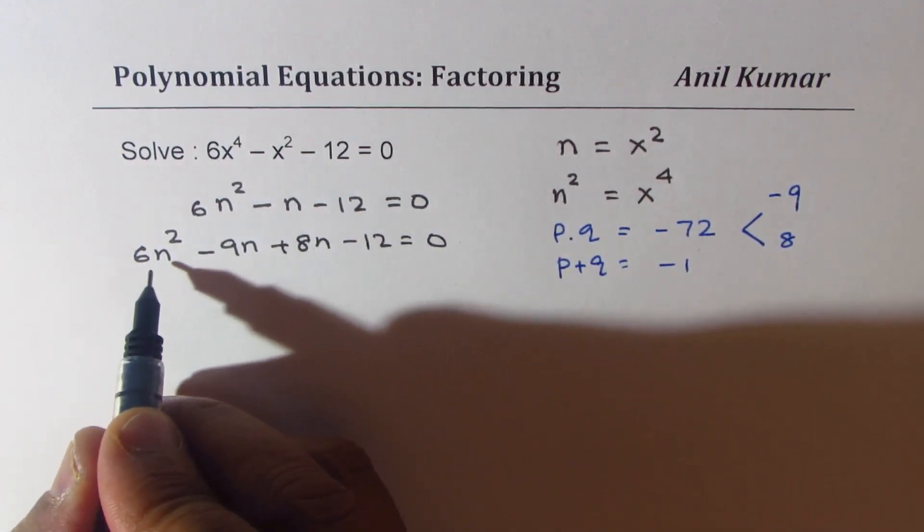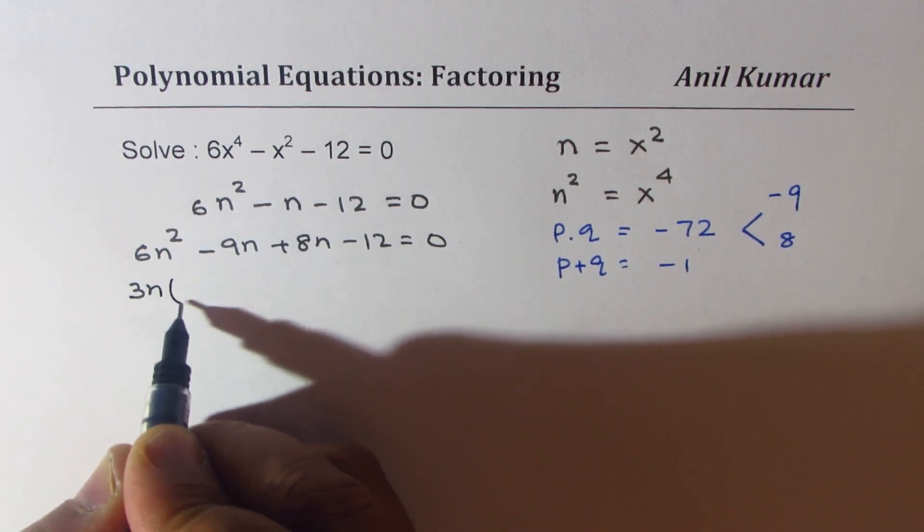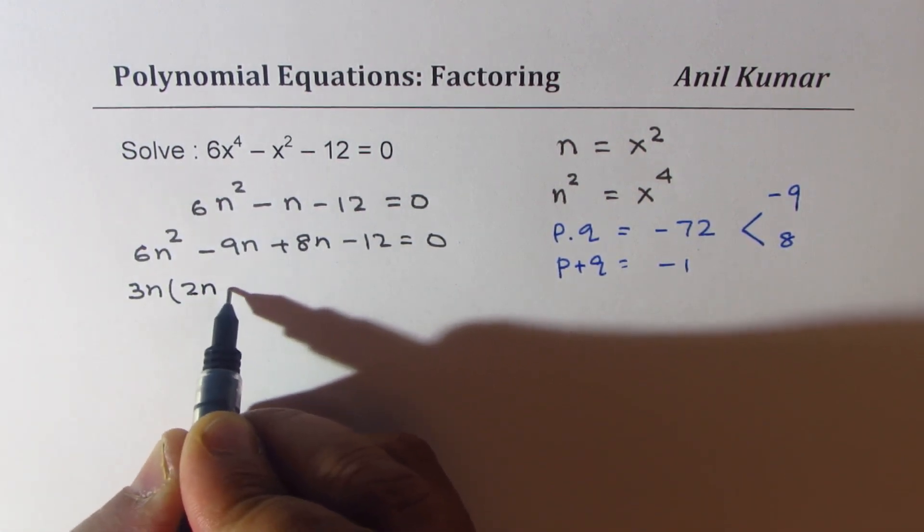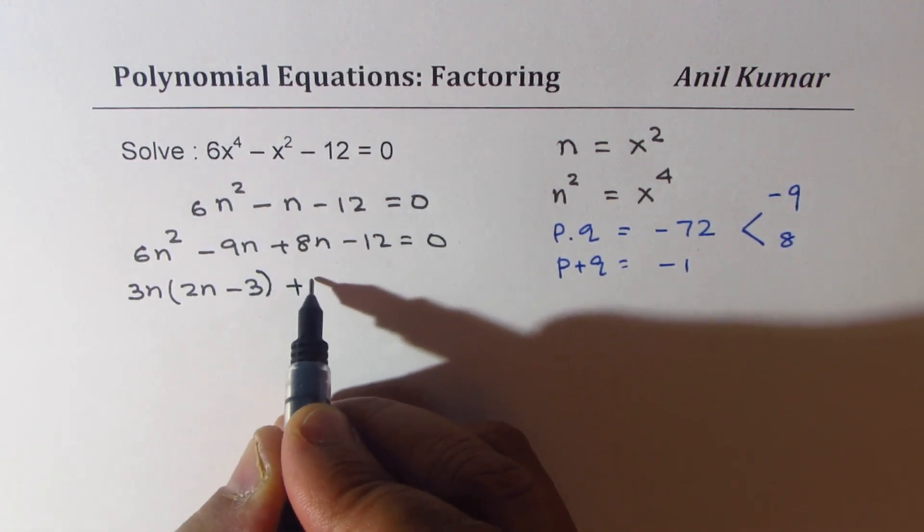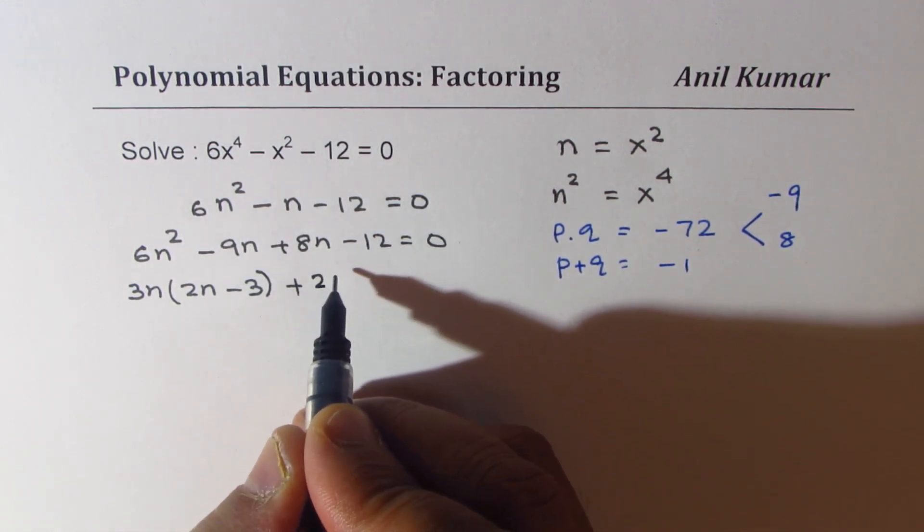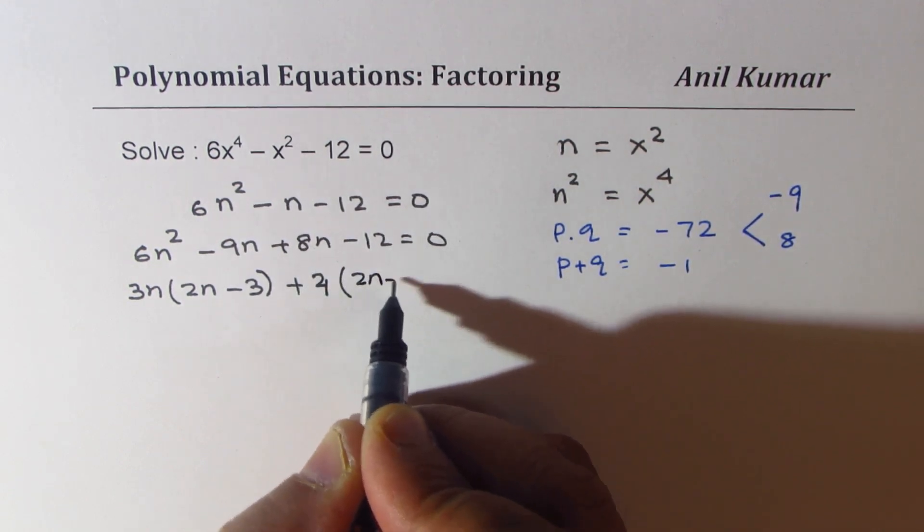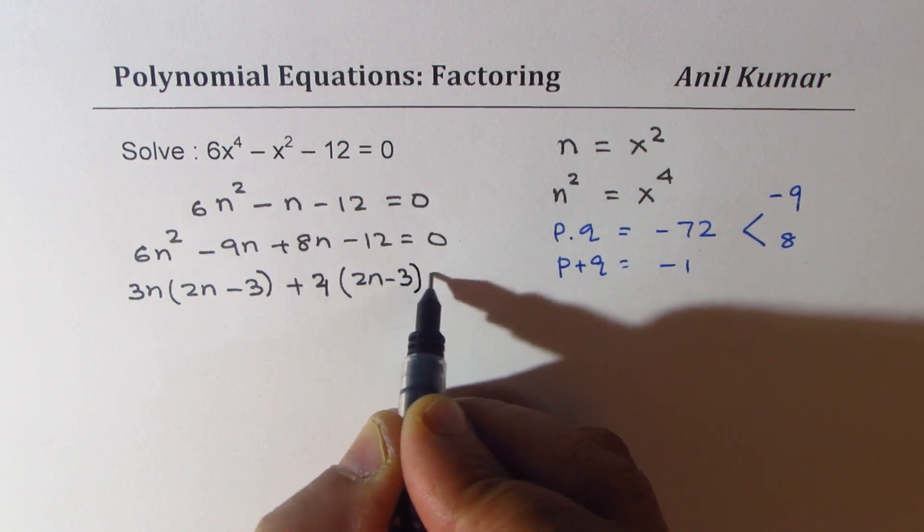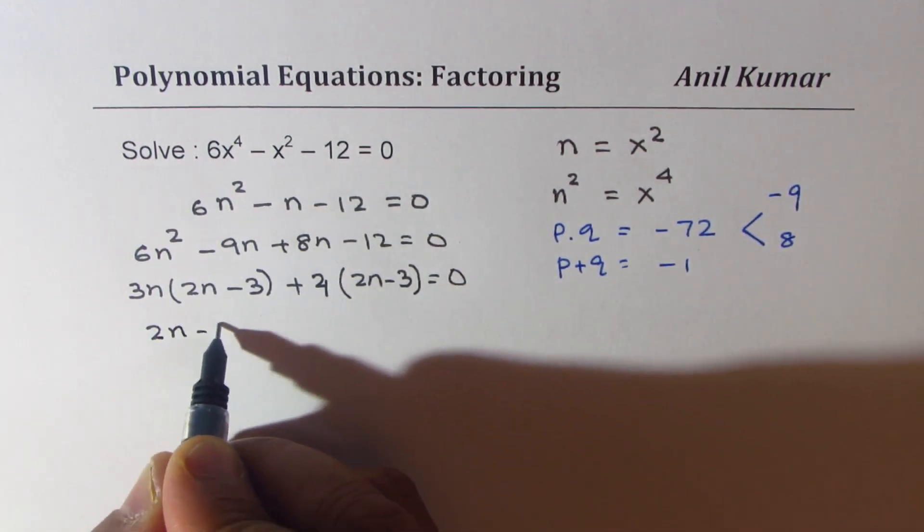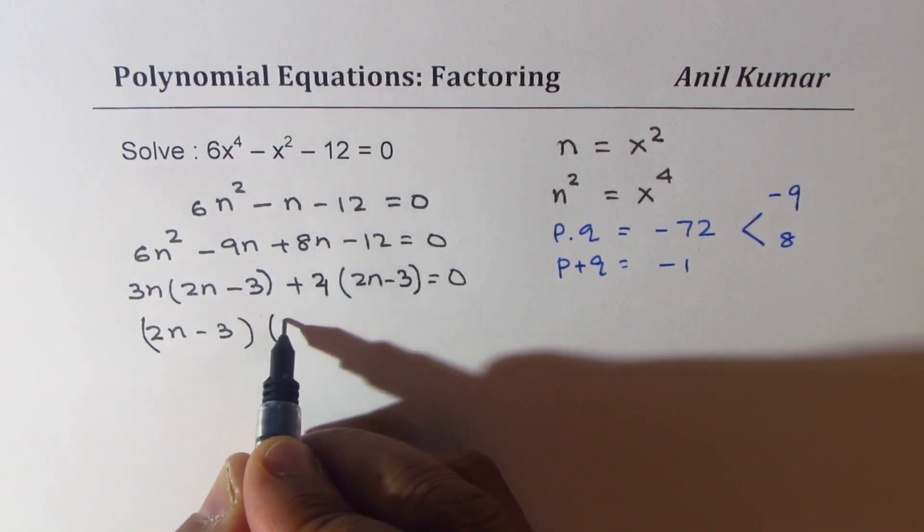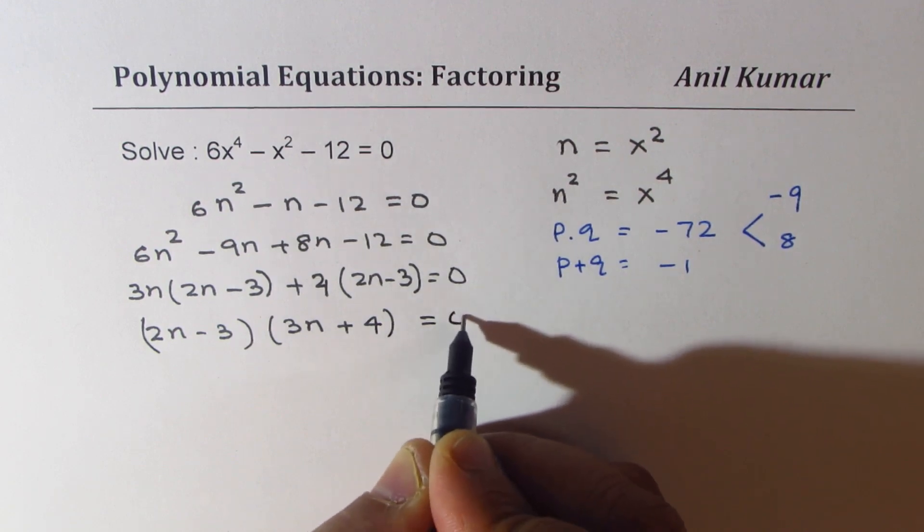Now we can do group factoring. Taking 3n, we get 2n minus 3. We can take 4 common here. So we get 2n minus 3. Now 2n minus 3 is common. And we get 3n plus 4 equal to 0.